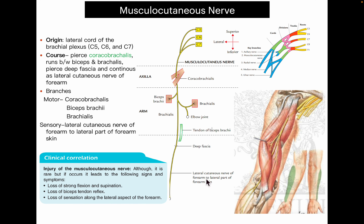The nerve runs downwards from the cubital fossa, pierces the deep fascia near the cubital fossa, and continues as the lateral cutaneous nerve of the forearm, which supplies the lateral part of the skin of the forearm. You can see this course of the musculocutaneous nerve in the diagram.